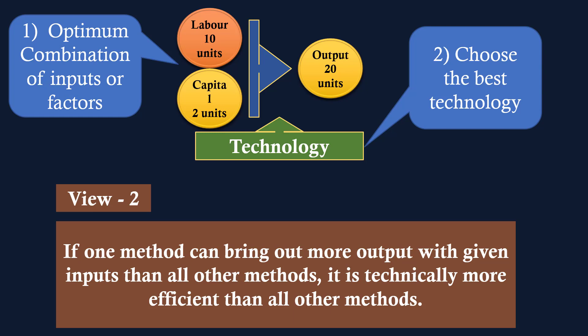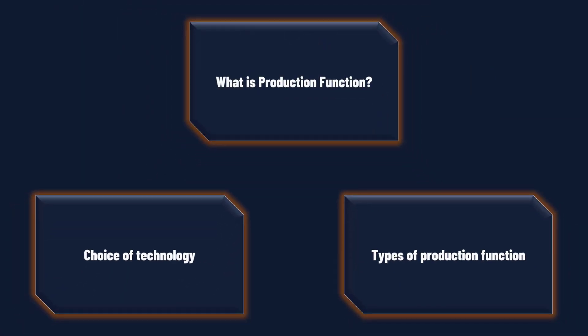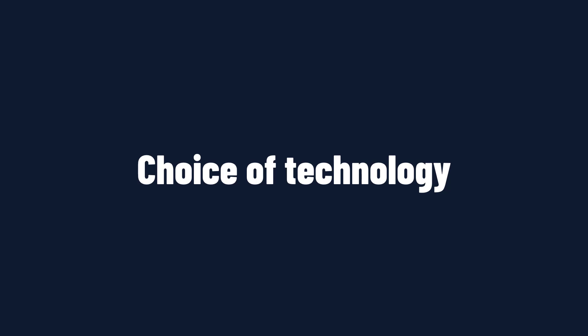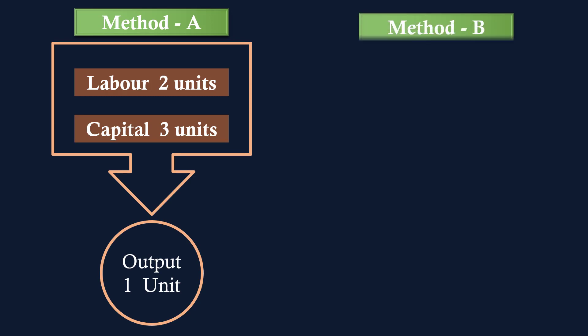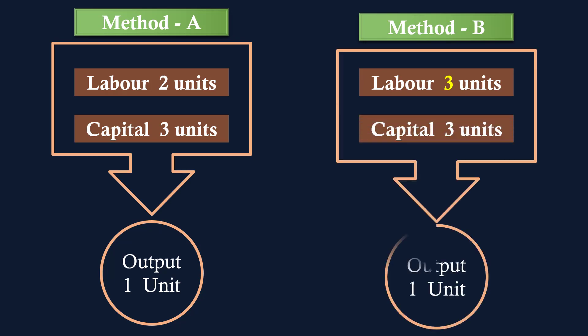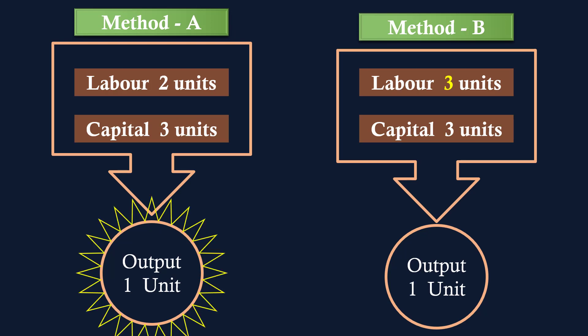Let us analyze the first view. Assume a producer uses two factors, namely labour and capital, to produce a good, and there are two methods of production, say A and B. Under method A, the producer uses two units of labour and three units of capital to produce one unit of output. Under method B, the same producer uses three units of labour and three units of capital to produce the same one unit of output. Method A is technically more efficient than method B because method A uses one unit of labour less and the same units of capital.